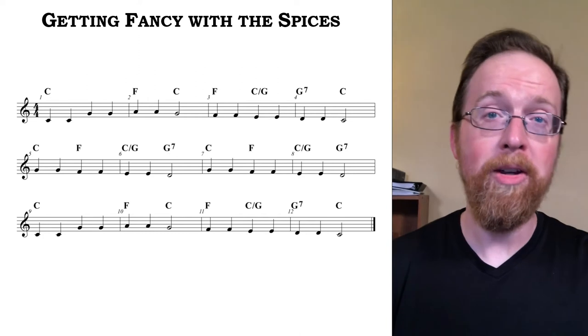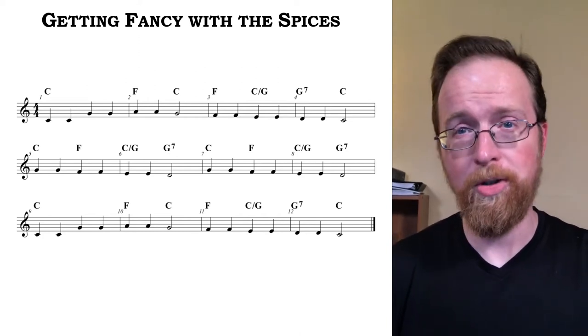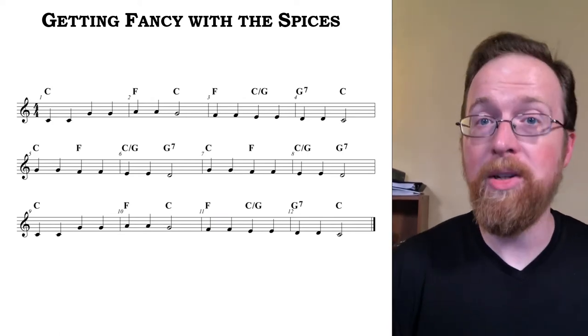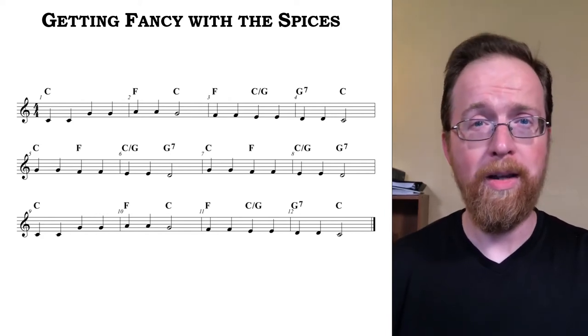Now you might think of this as a C major triad in second inversion, 6-4 position, but since the C over G always precedes the dominant seventh, we want to think of that as the cadential 6-4 instead.